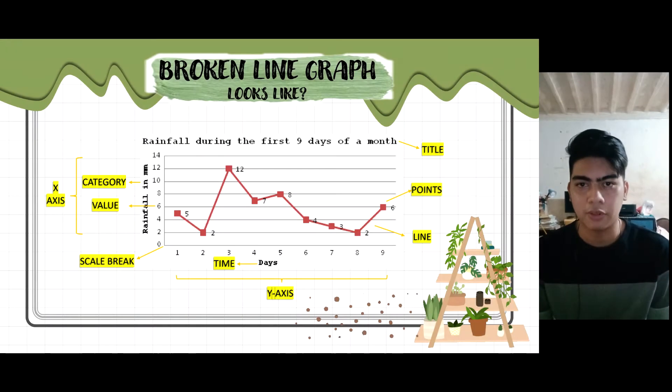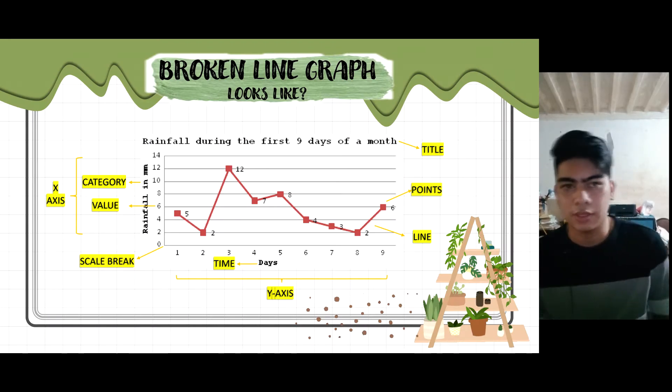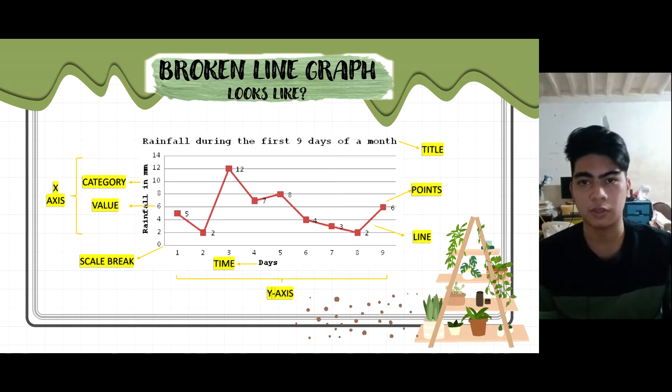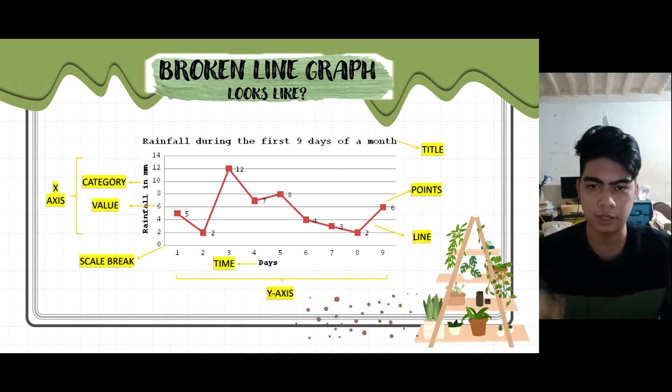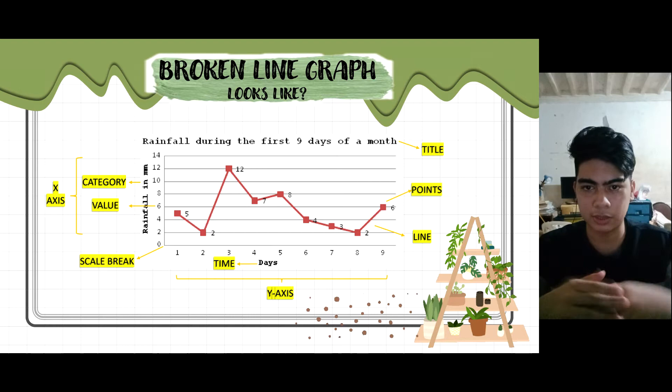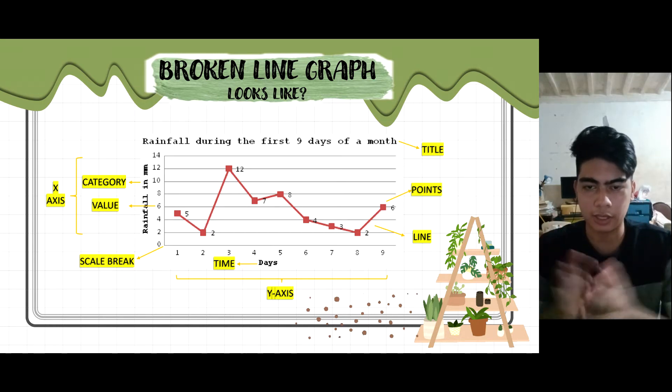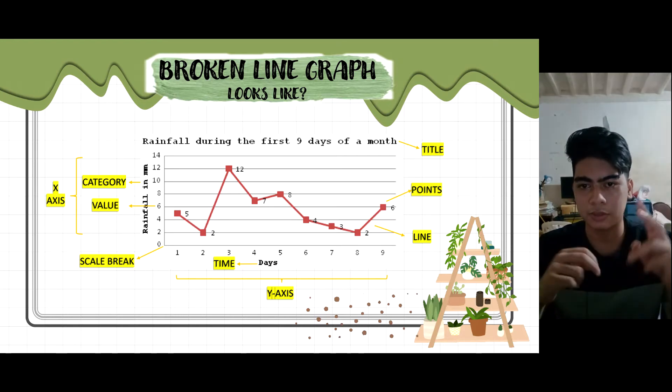So what does a broken line graph look like? A broken line graph looks like this. As you can see, on the top portion of a broken line graph we can see the title, on the left side of a broken line graph we can see the x-axis, on the bottom portion of a broken line graph we can see the y-axis, and inside the x and y-axis we can see the points and lines that are used. Now the points can be a star, triangle, circle.